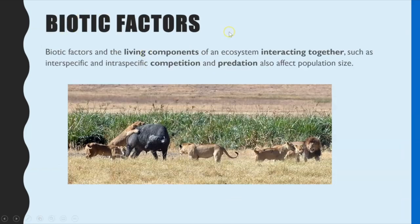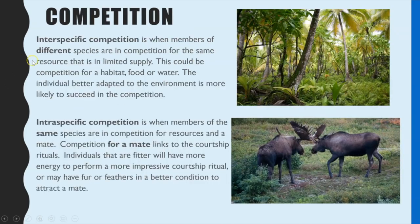The next factor to consider is biotic factors — the living components of an ecosystem — but it's really about how different organisms interact together, which leads us on to competition. You have two types: interspecific (I-N-T-E-R), which is organisms between different species competing; and intraspecific (I-N-T-R-A), which is members of the same species competing. In both types there is competition for space, food, and water. The key difference is that members of the same species also compete for mates, which links to courtship rituals.